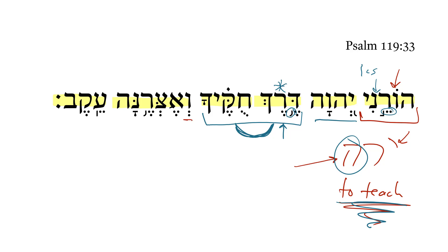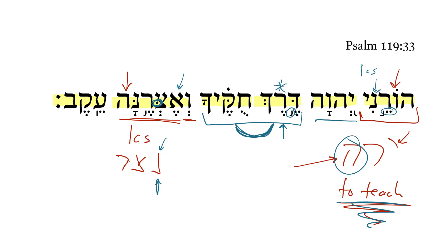Next, we get the conjunctive 'and I will keep it.' Here we have a Qal imperfect first common singular of the root Natsar. Notice it's a one-nun, and so this Dagesh right here is that one-nun — it has assimilated. The first common singular Aleph tells us we're looking at that.